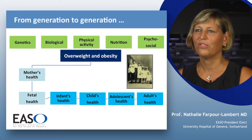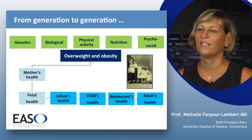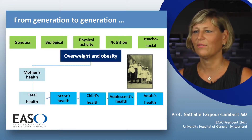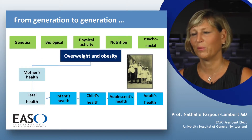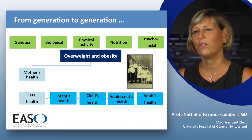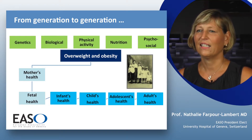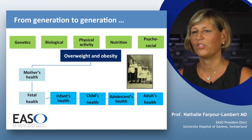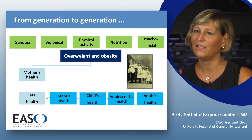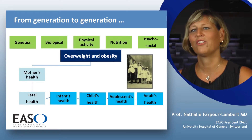It goes from generation to generation like a snowball effect. We know that genetic factors, biological, physical activity, nutrition, and psychosocial factors influence overweight and obesity in the population. We know also that overweight and obesity influence the mother's health, but also the child's health. As it goes through the lifespan, it's important to develop interventions at each level, both to prevent obesity or to improve the management of obesity and to prevent obesity in the next generation.